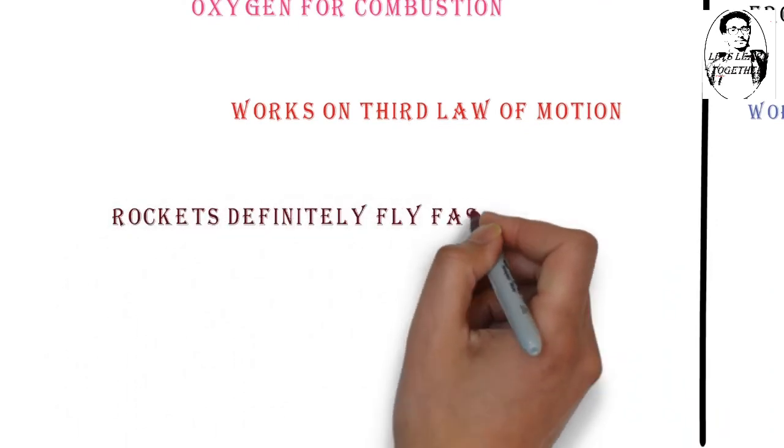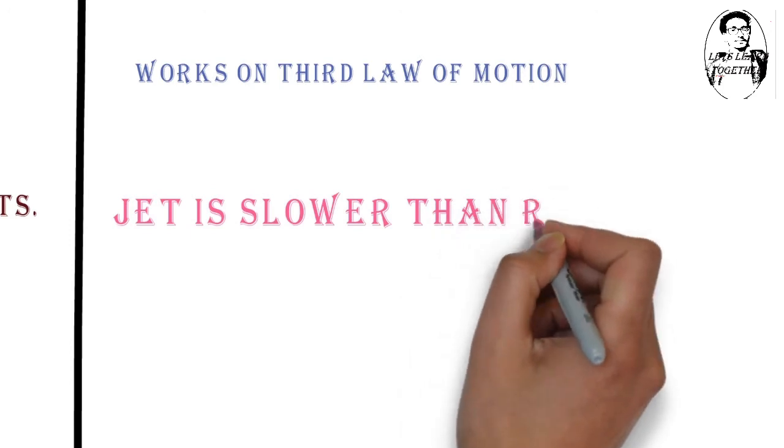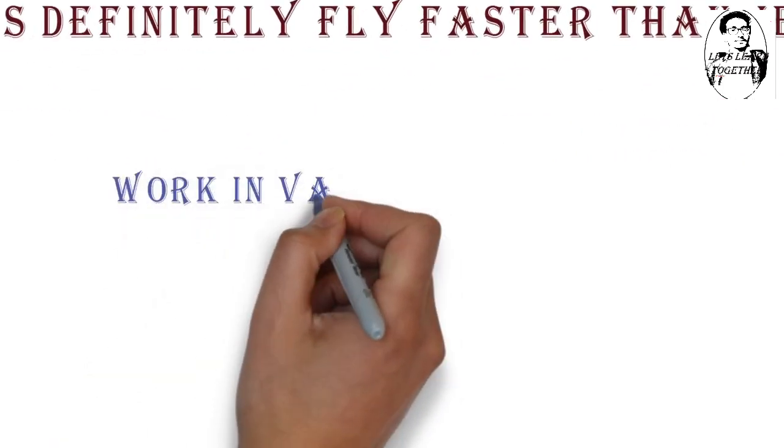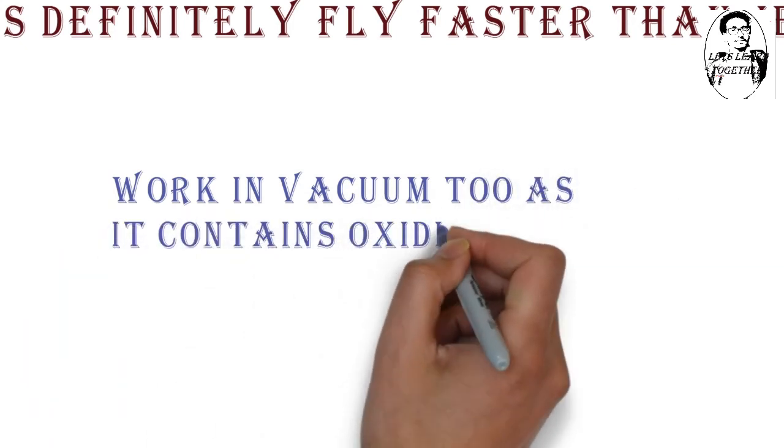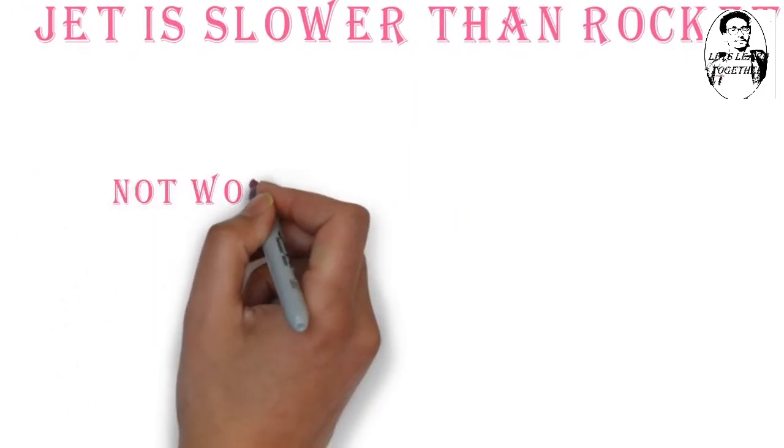Rockets definitely fly faster than jets. A supersonic airplane can fly faster than the speed of sound, 1236 km/h or 768 miles per hour. A rocket engine works in vacuum too since it contains oxidizer, but jet can't work in vacuum due to absence of air.